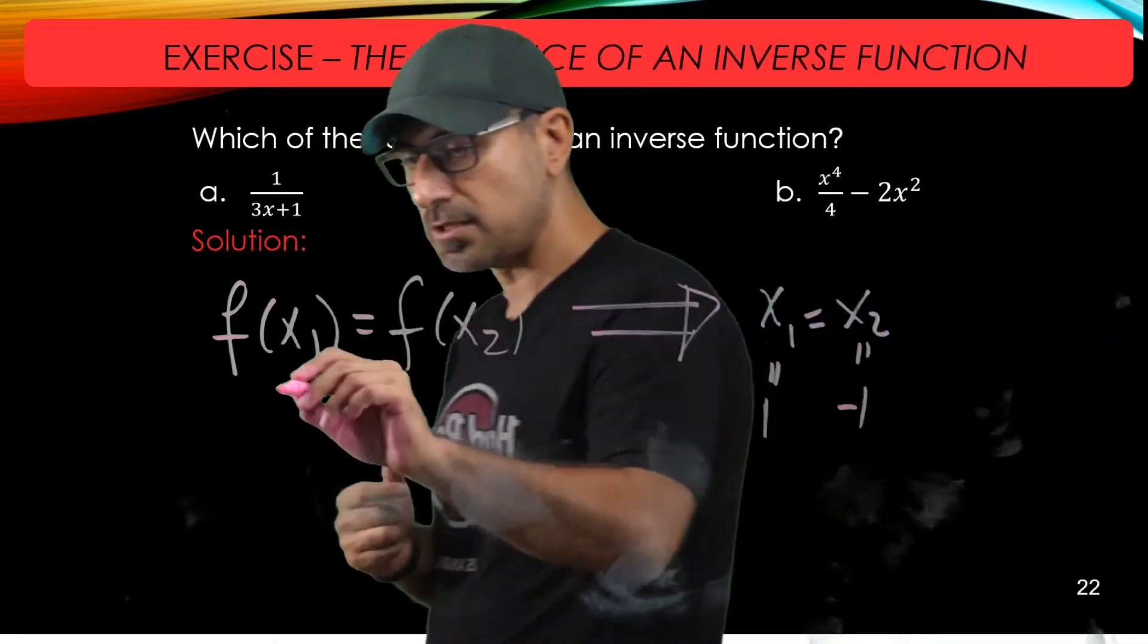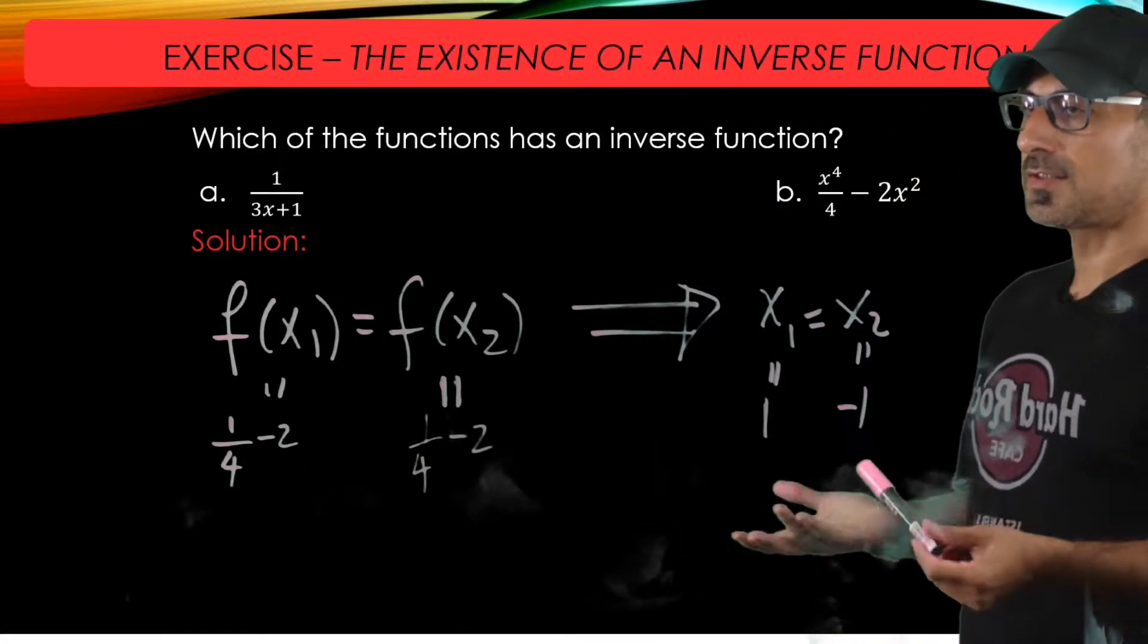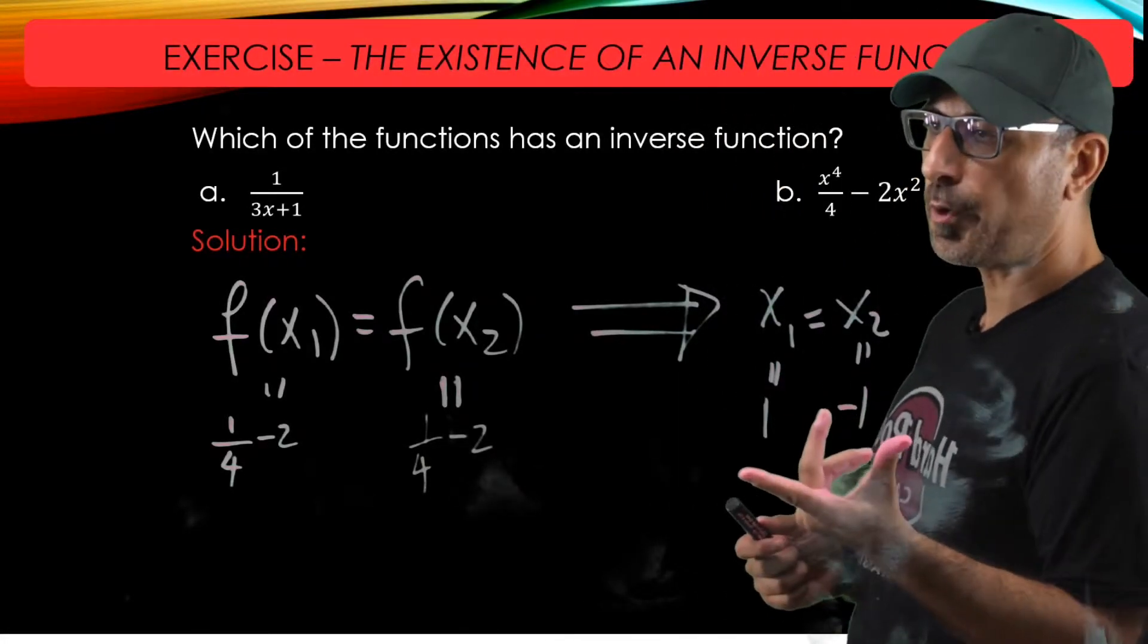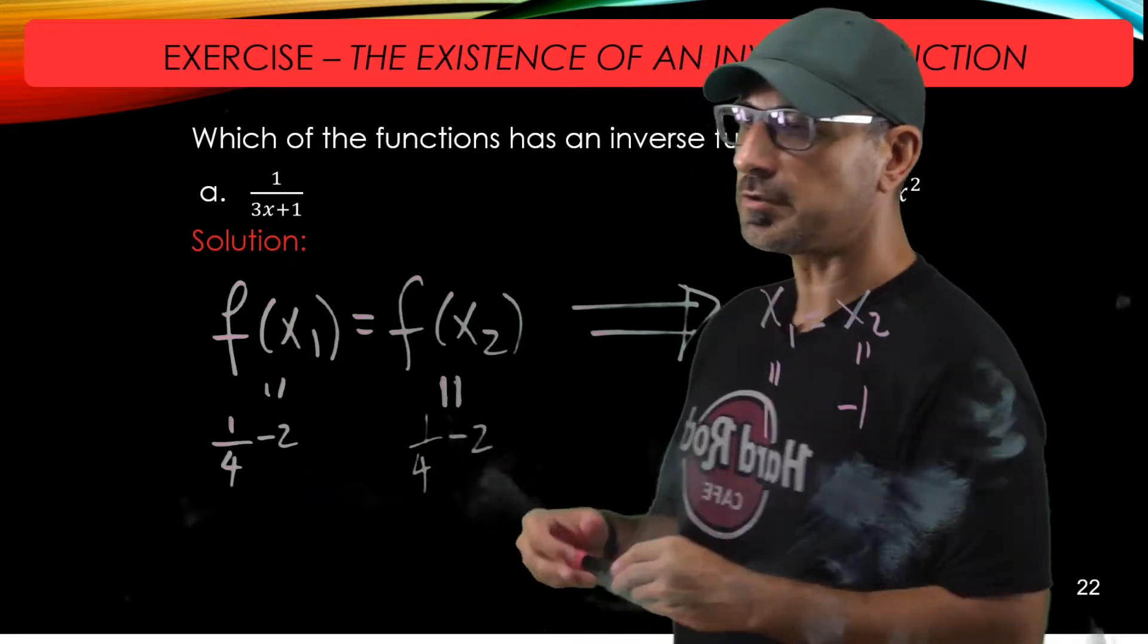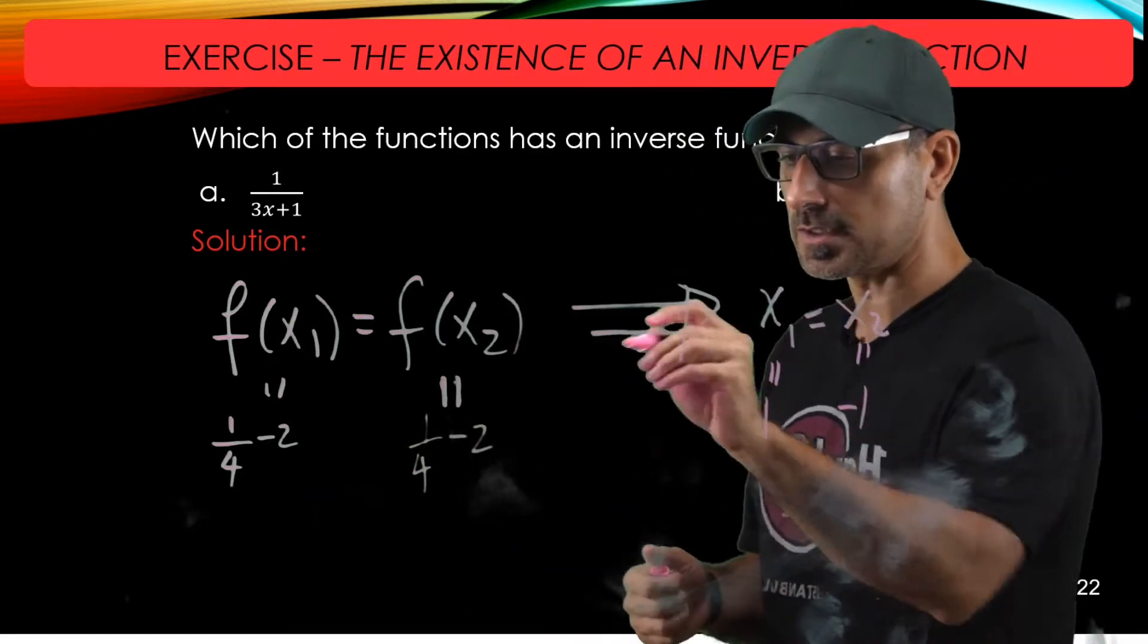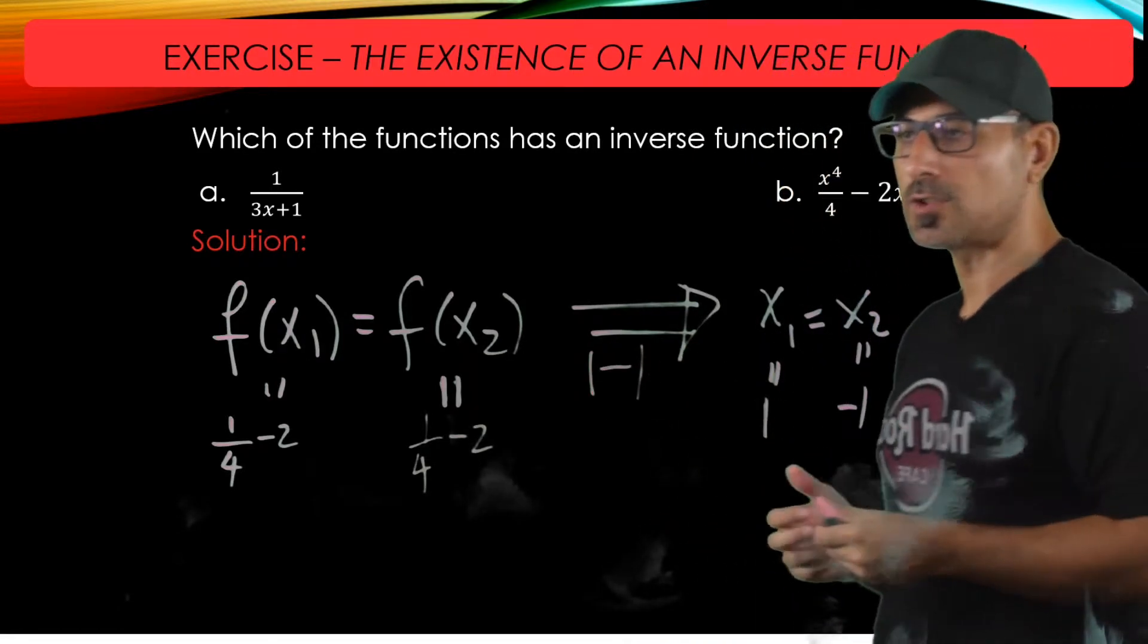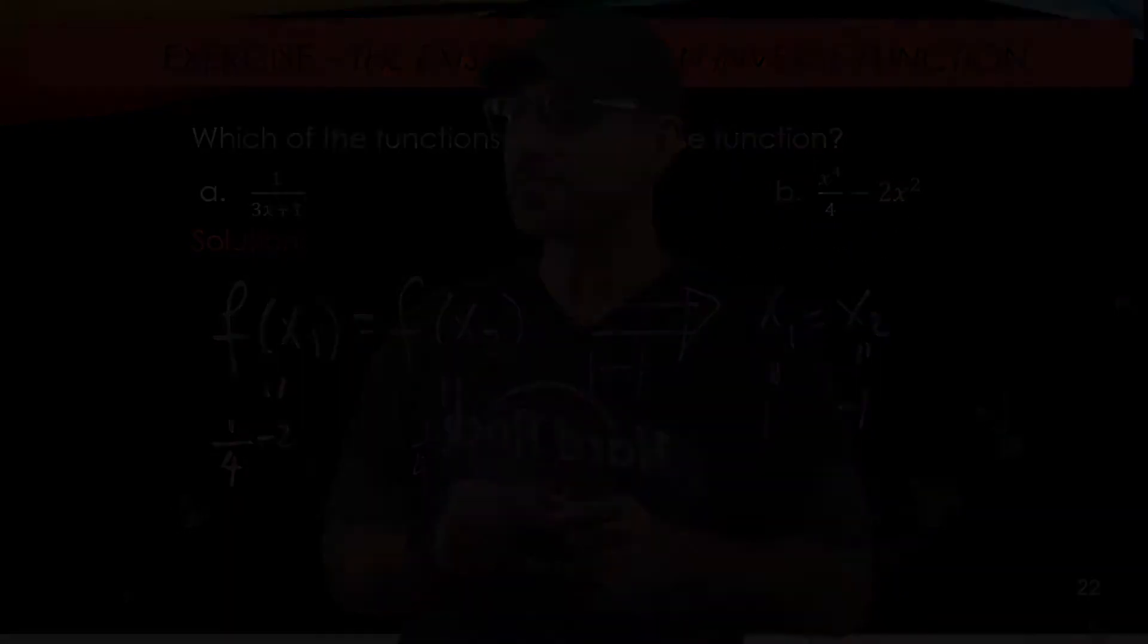And the corresponding function values are going to be equal. So this implies that I found two points for which the function values are equal that violates the condition called one-to-one. And when the function is not one-to-one, you can't talk about the inverse of the function.